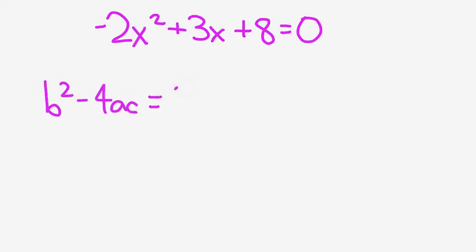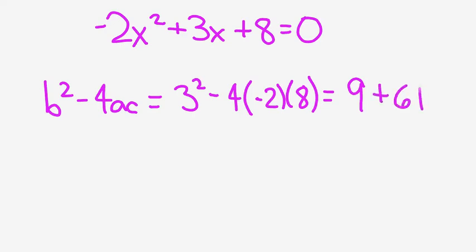So b is 3, so I'll have 3 squared minus 4 times negative 2 times 8. 3 squared is 9. Negative 4 times negative 2 is 8, and 8 times 8 is 64. So we'll have 9 plus 64, which is equal to 73. So b squared minus 4ac is greater than zero, which means that this quadratic equation has two distinct real roots.